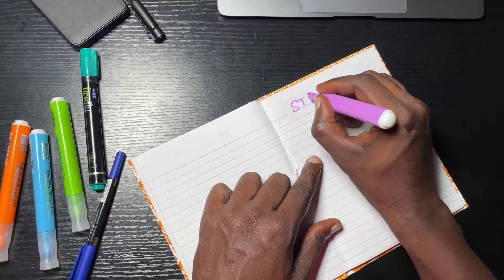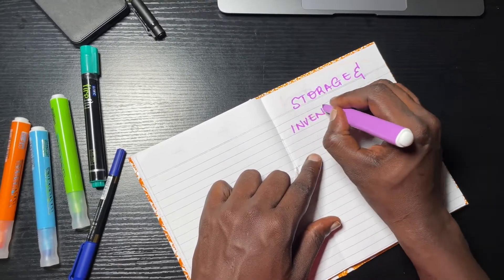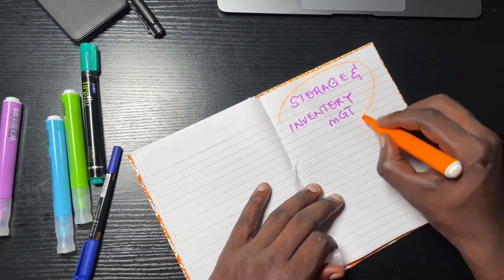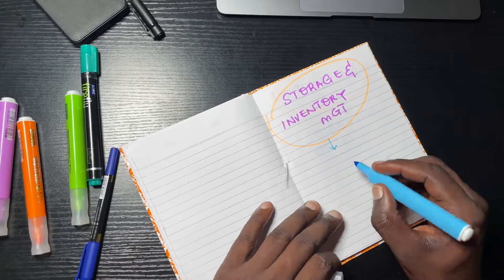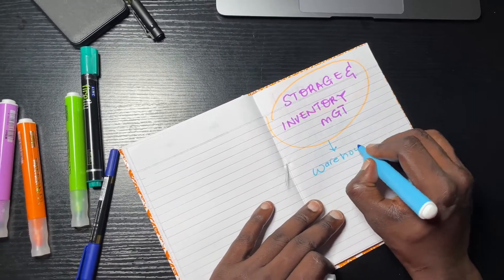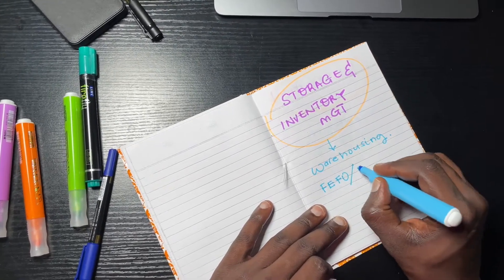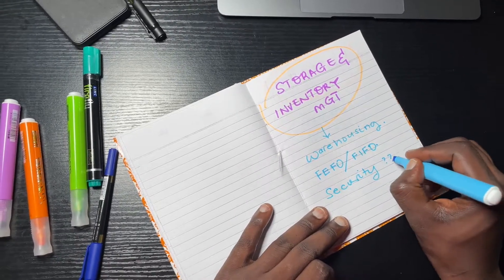When medicines and other health supplies eventually reach the central warehouses, they must first be temporarily stored before they are dispatched to final users. Principles of inventory management must therefore be implemented to ensure that these commodities remain viable during storage. Specifics of inventory management will include warehousing, the principle of first expiry first out, first in first out and good security.